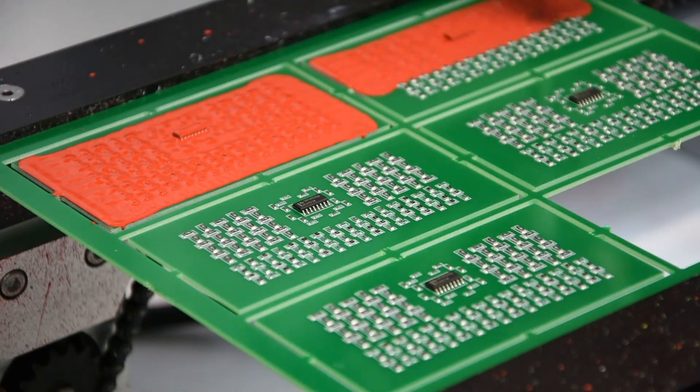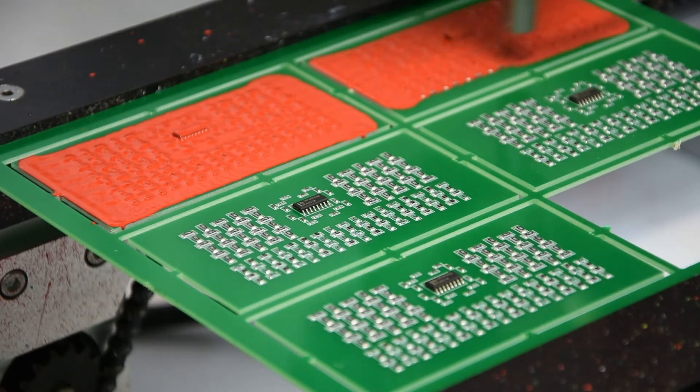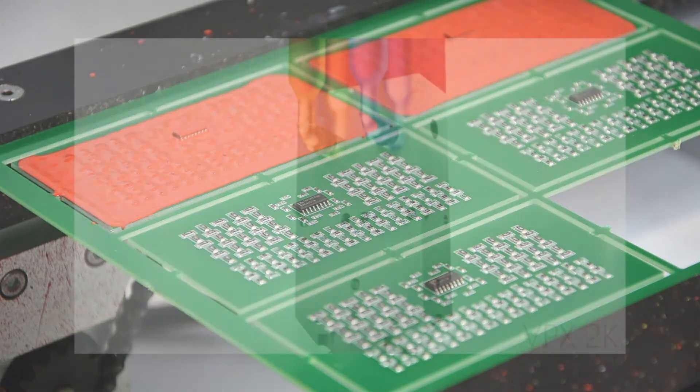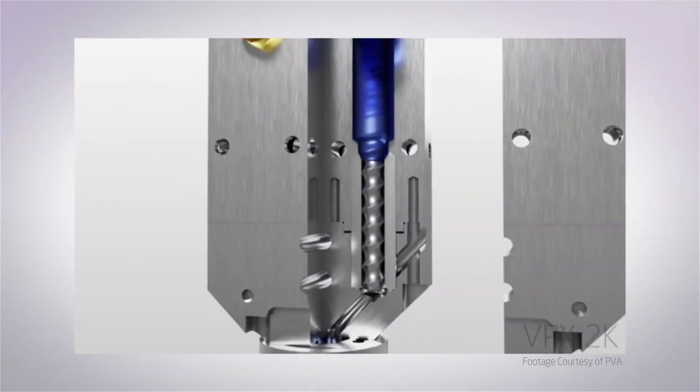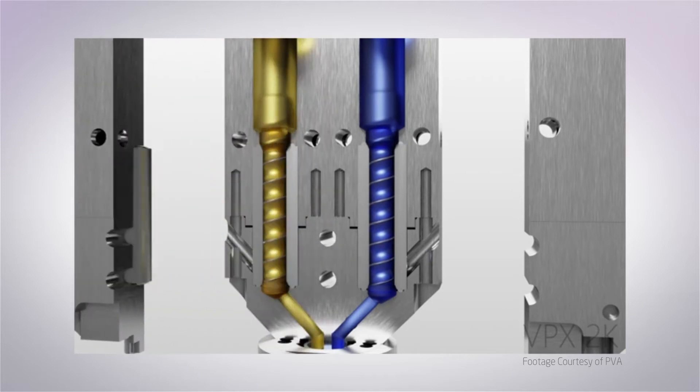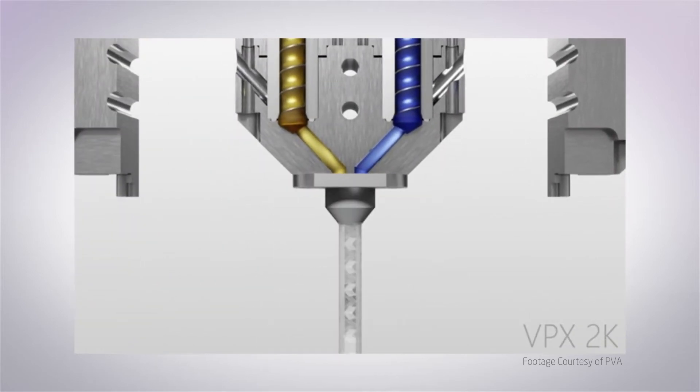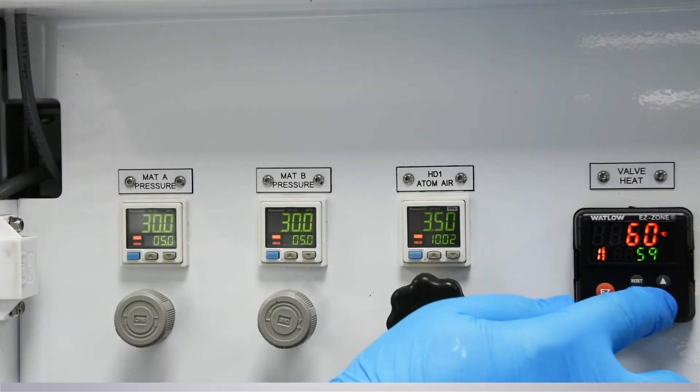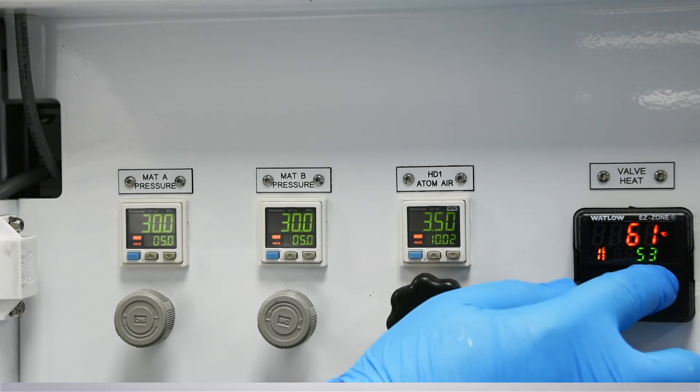When using 2K materials, it is advisable to heat the valve. This is because the 2K materials are thicker than traditional solvent coatings. By applying heat, you ensure the material flows well throughout the valve. We will demonstrate the possible effects of cold material in the troubleshooting section later in this series. Usually, we would set this to around 60 degrees centigrade, but this can be adjusted depending on the ambient temperature in your location or material selected.